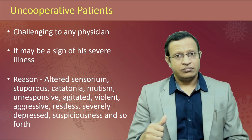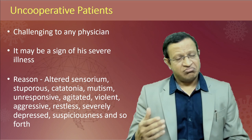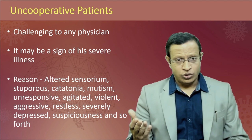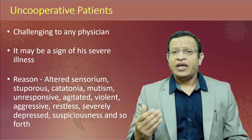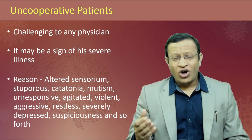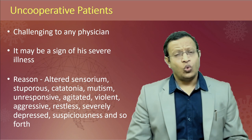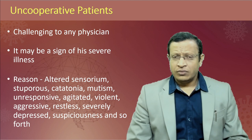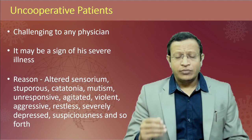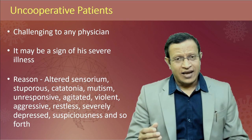Reasons can be that the uncooperativeness is because of altered sensorium, maybe withdrawal of alcohol, disorder, stuporous. The patient may be part of a catatonia. The person may have mutism, maybe selective mutism, or else because of various reasons they are unresponsive. Agitated, violent, aggressive, restless, severely depressed, or even very suspicious patients. Just because a patient is uncooperative, you cannot say they are refusing to give consent.